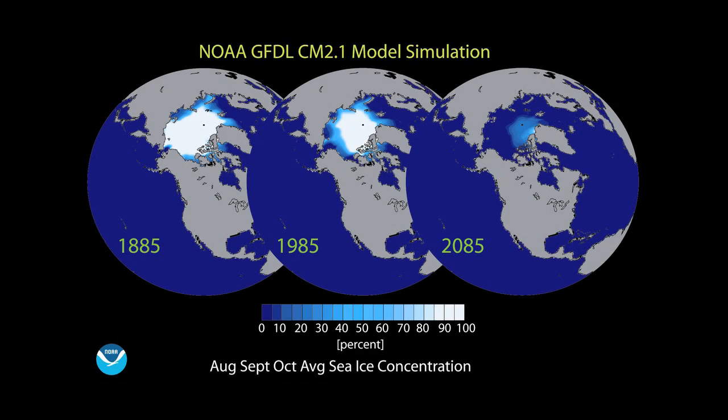GFDL's climate model experiments suggest that by the late 21st century, the Arctic Ocean could become almost ice-free during the late summer.